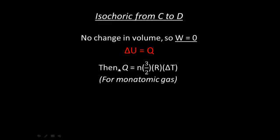Heat for an isochoric process of a monatomic gas equals N times 3/2 times R times delta T — the number of moles times 3/2 times the gas constant times the change in temperature. This is for monatomic gas, and since we're dealing with a monatomic gas, this is what we'll use.